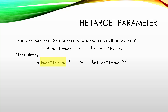So this part here — the mean for men minus the mean for women — is actually going to be our target parameter, what we're going to be investigating. The zero on the right-hand side doesn't even have to be zero; we could adjust the formulas to make the difference anything we want to test. Maybe we want to test if men make $10,000 more than women, so instead of zero we could put 10,000 there. Our target parameter is generically the mean of the first group minus the mean of the second group.